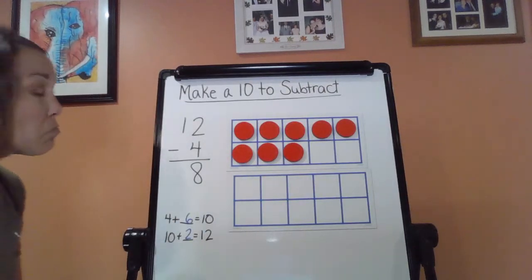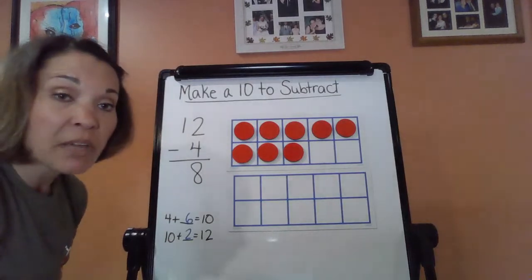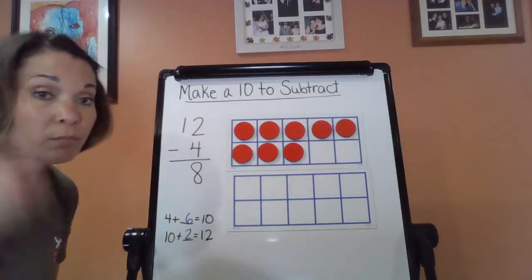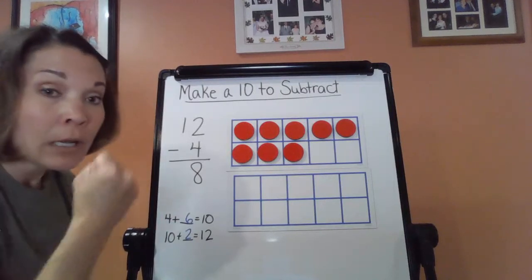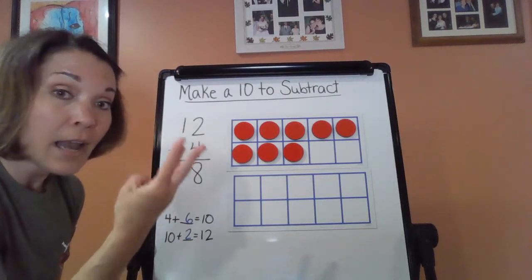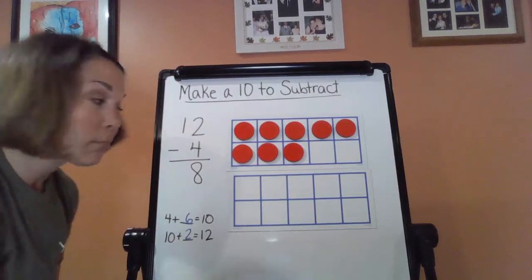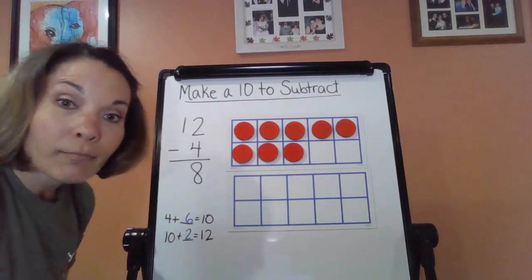Now maybe what happens if I wanted to count back. I'm going to put 12 in my brain. Count back 4. 12, 11, 10, 9, 8.